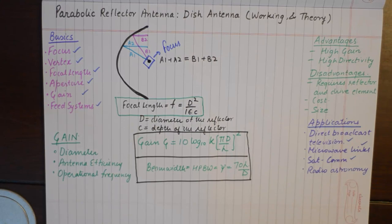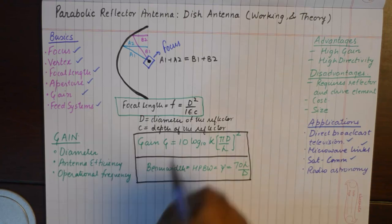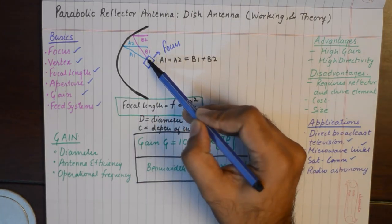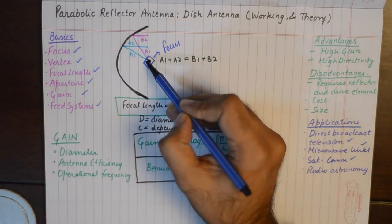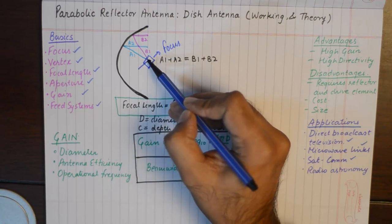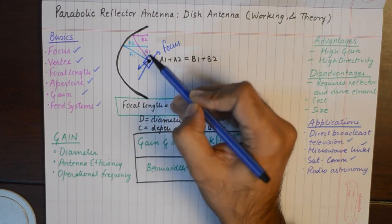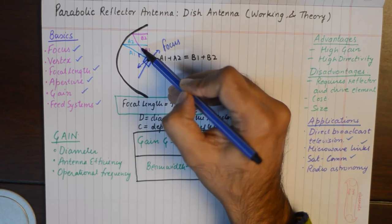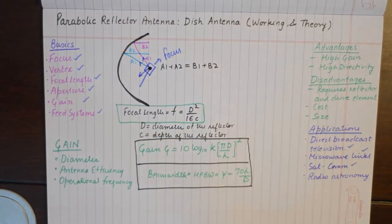The main function of this parabolic reflector antenna is to convert spherical wavefronts into planar wavefronts. This antenna that we place at the focus could be radiating in all directions.